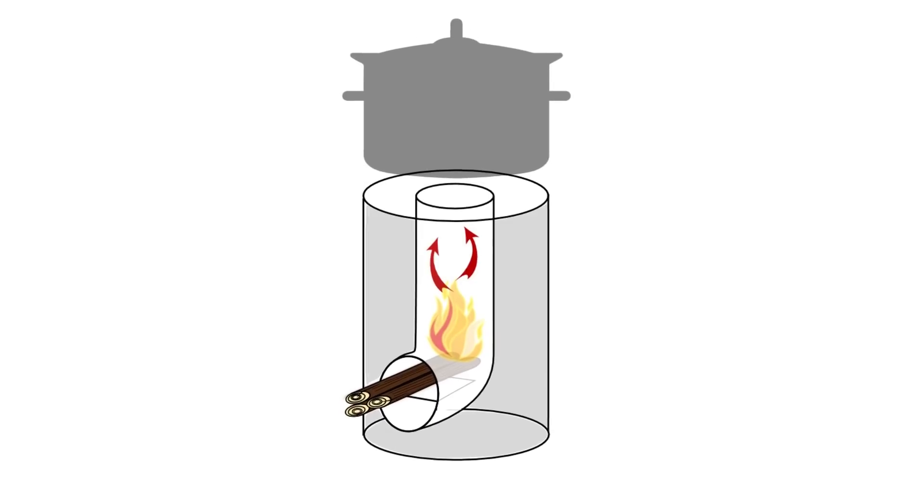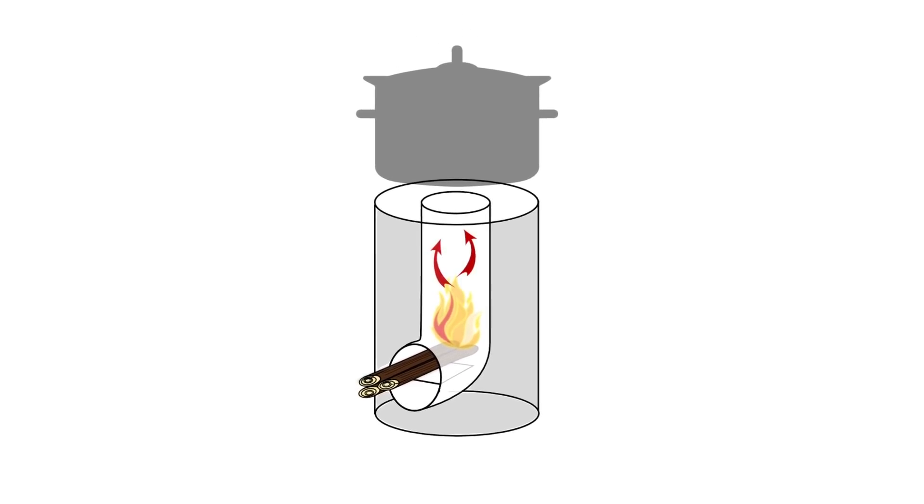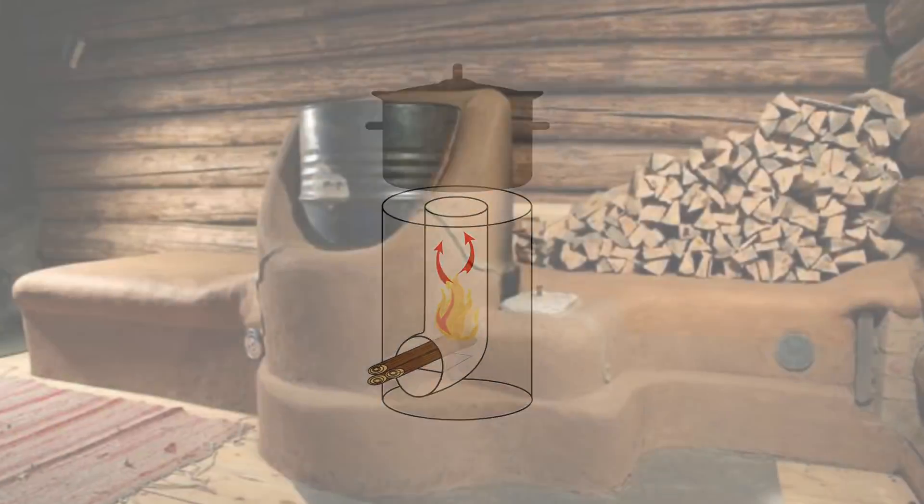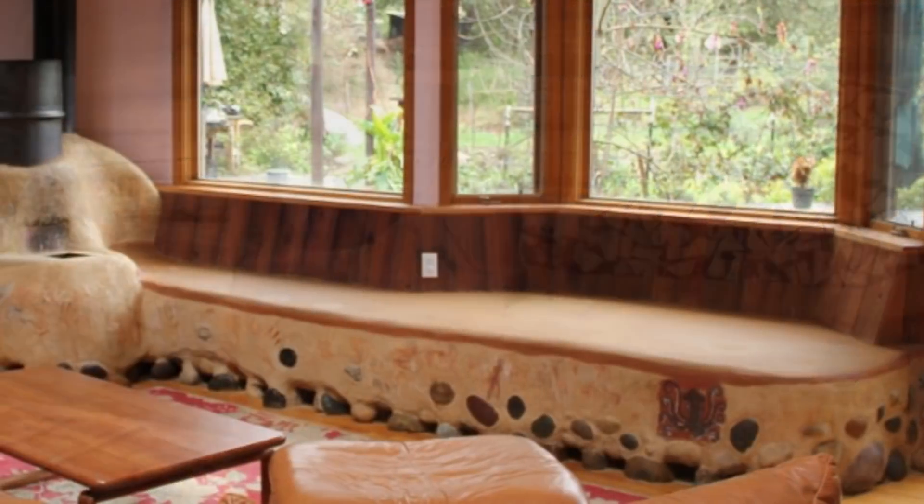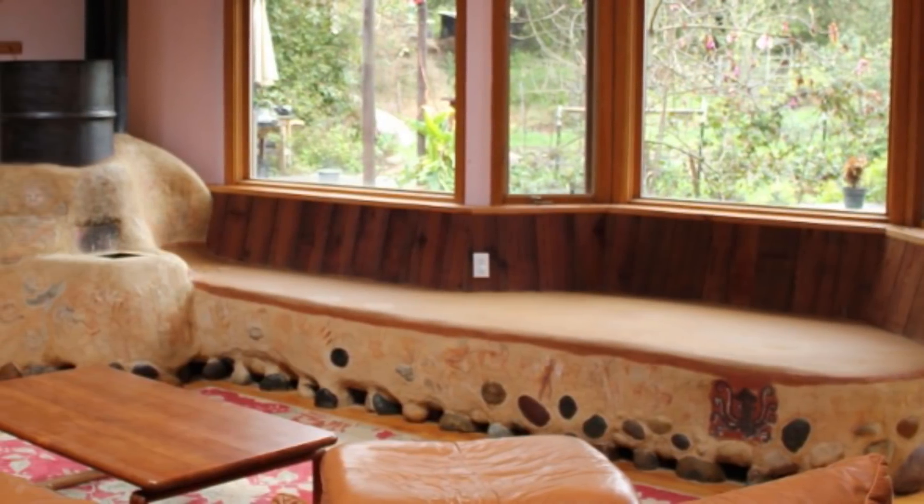The rocket stove technology was modified to work as a source of residential heat called a rocket mass heater, the most popular designs being made dominantly of mud.